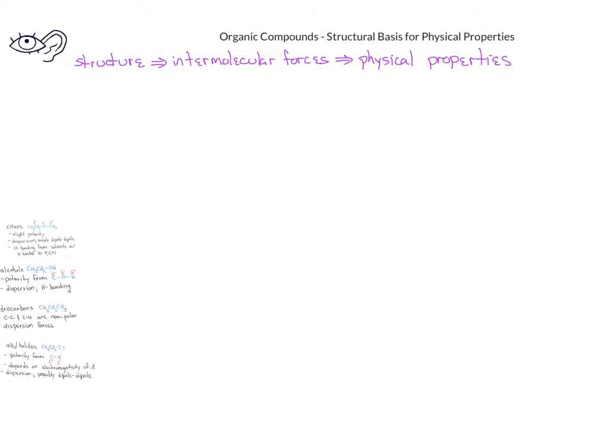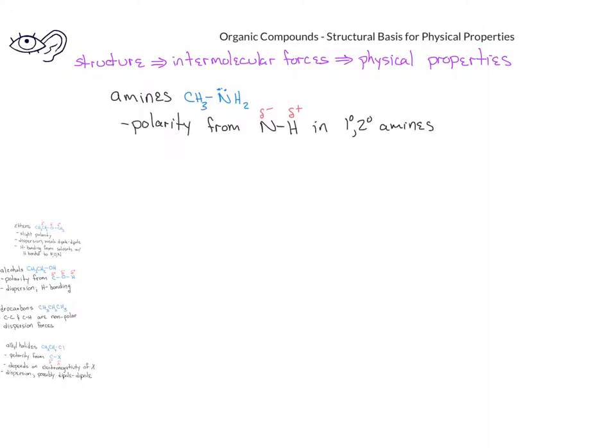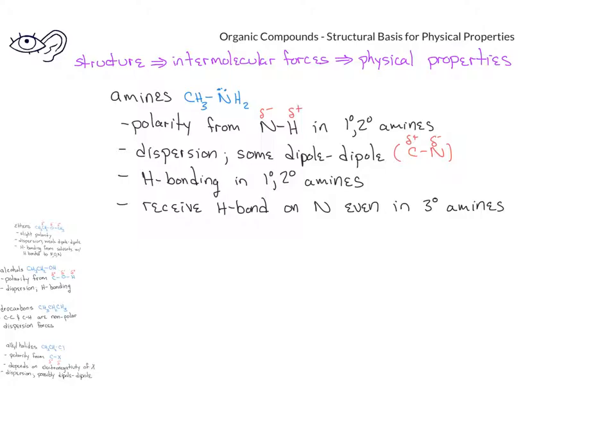The last functional group we learned about were the amines. Amines have a nitrogen bonded to a carbon. There is some polarity in the amines arising from the nitrogen bonded to hydrogen, assuming that we have a primary or secondary amine. Because of that nitrogen-hydrogen bond, primary and secondary amines could form hydrogen bonding. The presence of the nitrogen also allows amines to receive a hydrogen bond from other molecules, and this can even take place with tertiary amines.